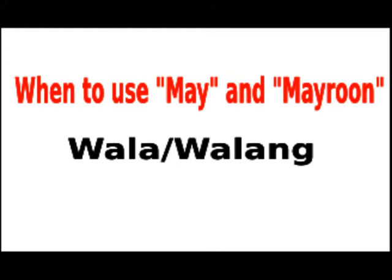How to use 'mayroon.' One. Mayroon is followed by monosyllabic words like ka, na, nang, pa, ba, din, and daw, with ligatures properly attached to the monosyllabic words. Mayroon may be shortened to 'meron.' Mayroon pang trabaho si Lucio. — Lucio still has a job. Meron ka bang bagong aklat? — Do you have a new book?